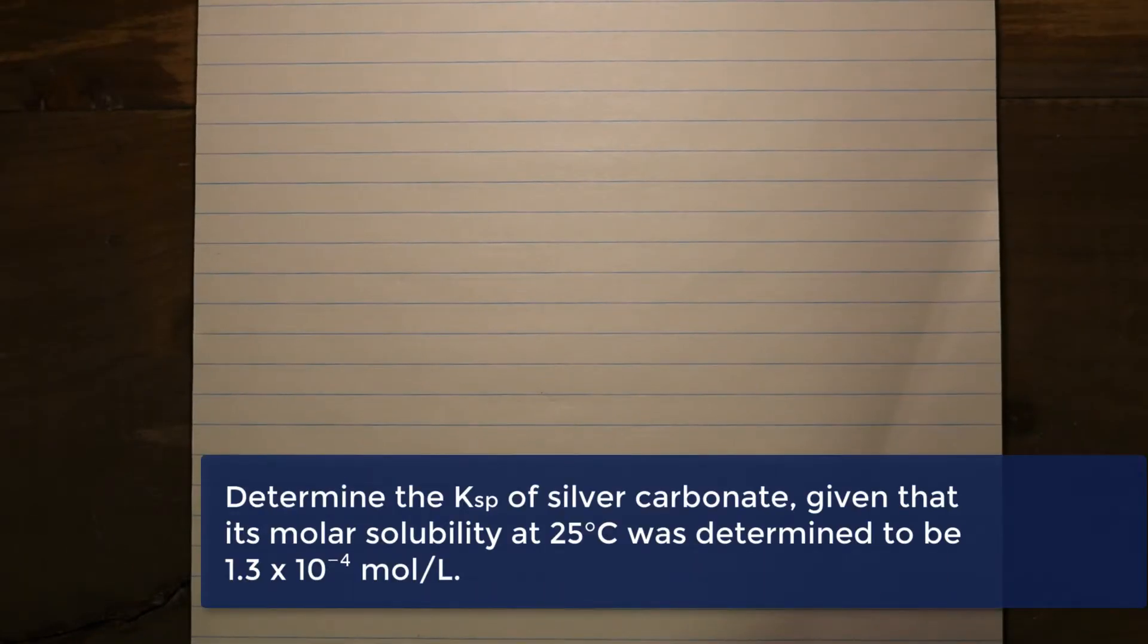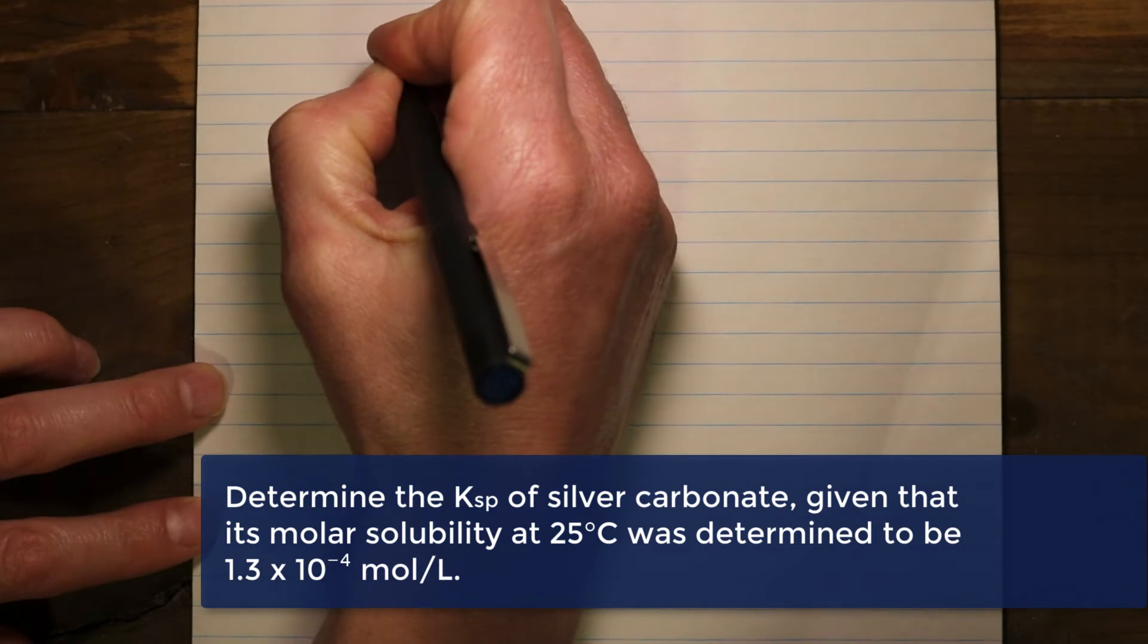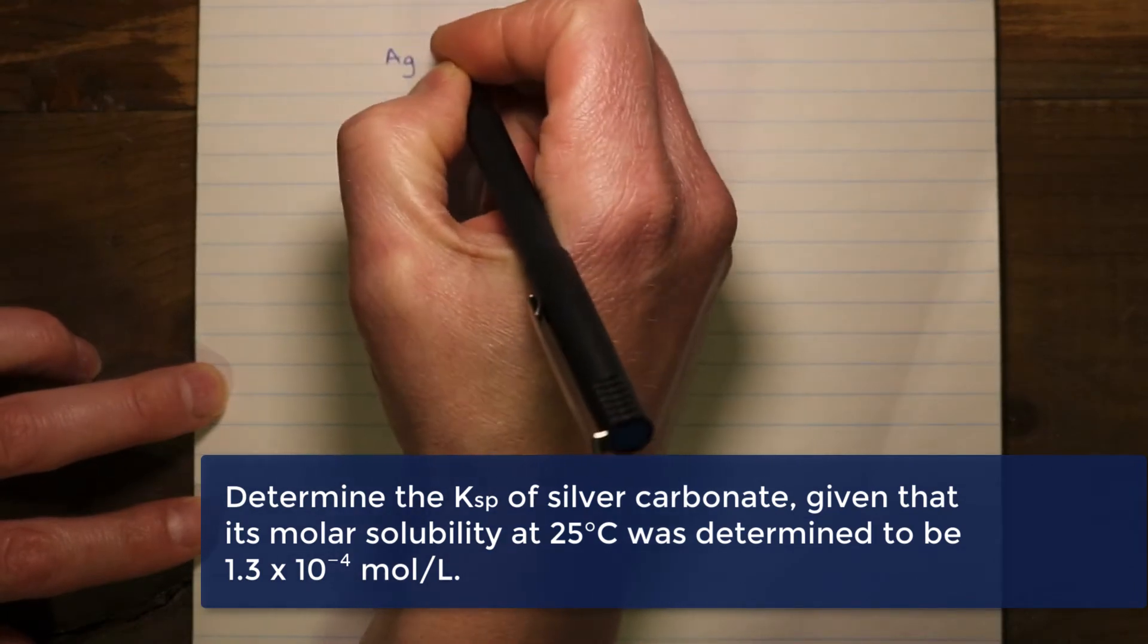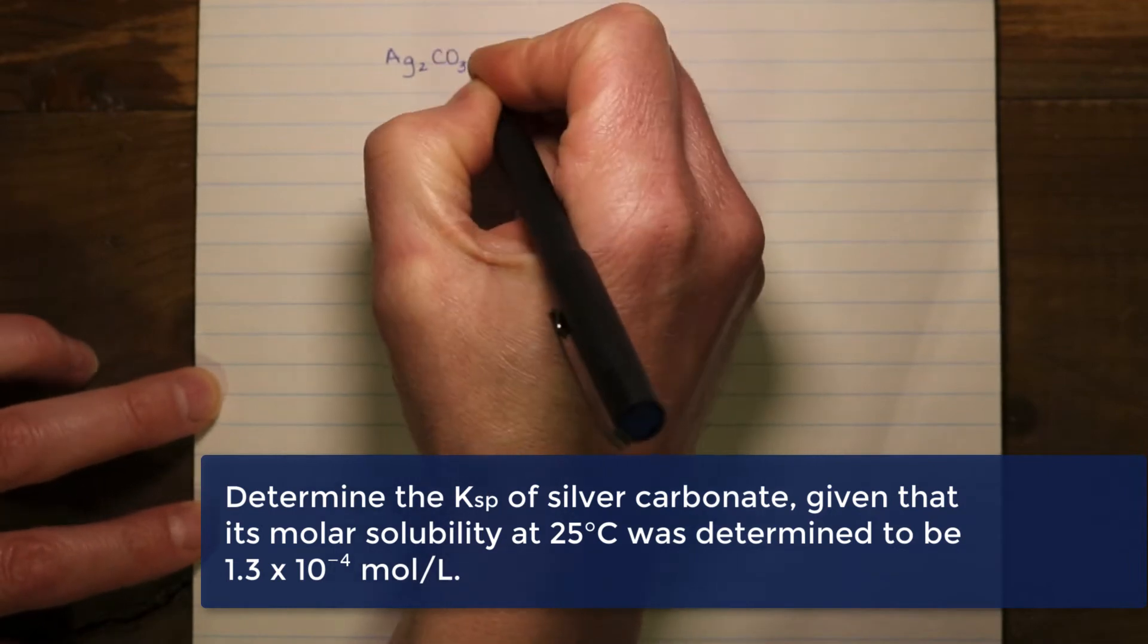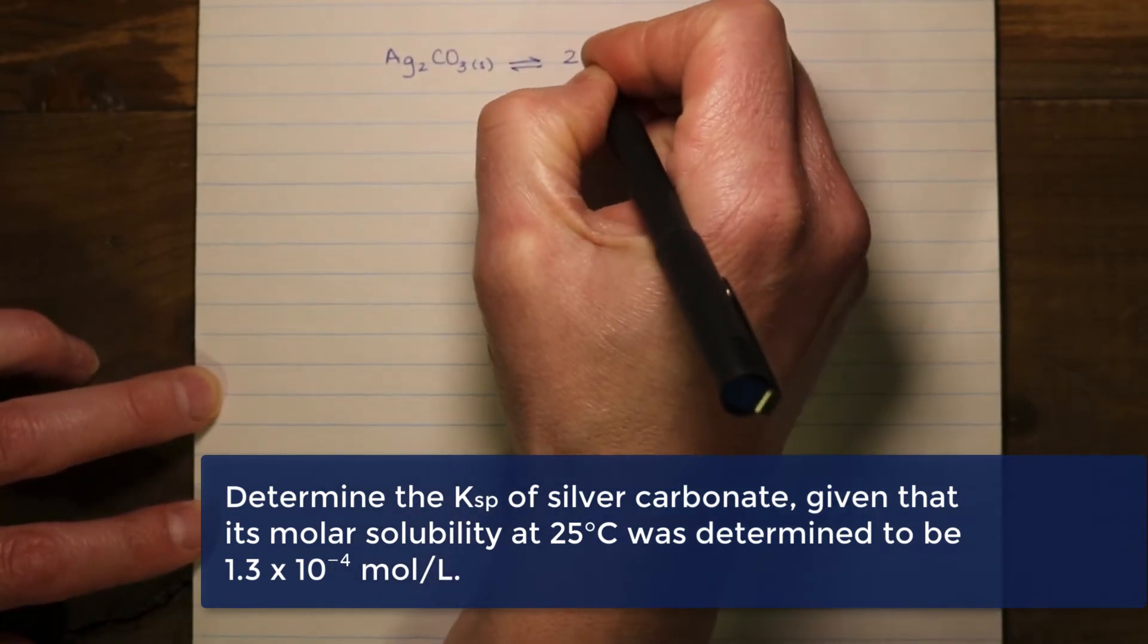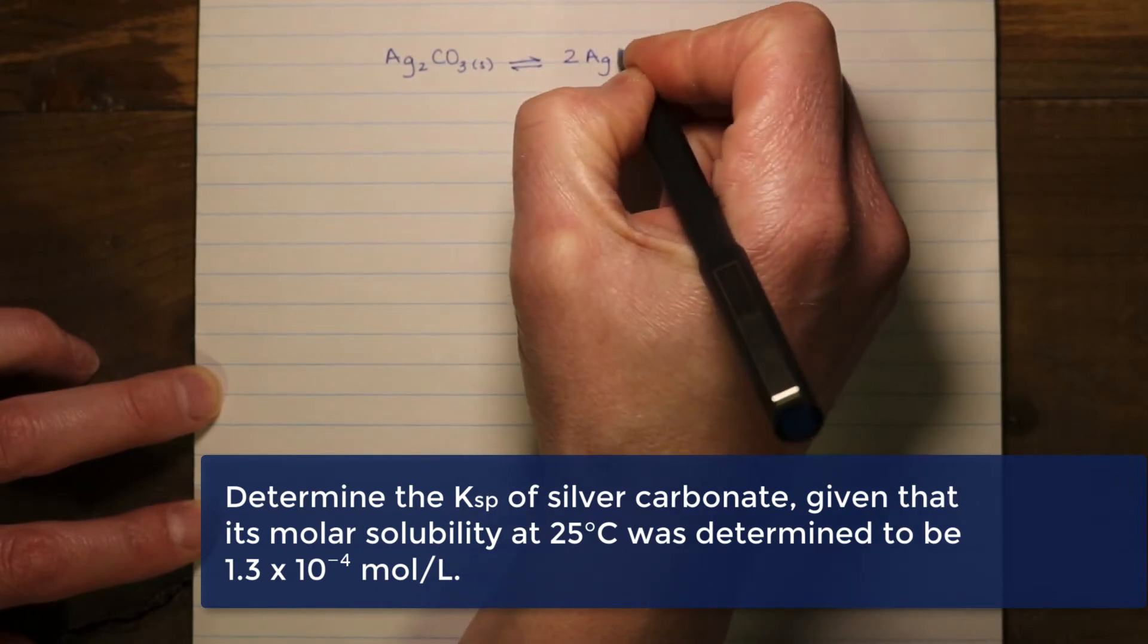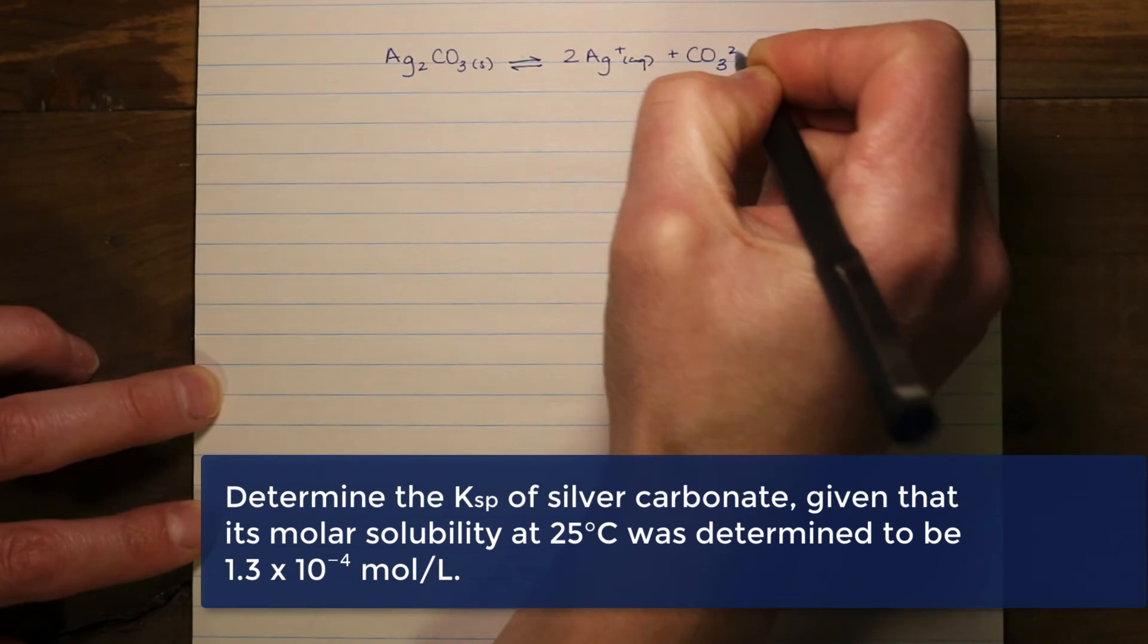This first problem is trying to establish the Ksp, that is the solubility product constant, if we understand the molar solubility. What you're going to notice with this particular equilibrium equation is that we have a solid here and two aqueous components. Remember, with that solid, its concentration is relatively constant, or we say that it's factored into our equilibrium constant, so we don't actually have to worry about it when we put together our equilibrium expression.